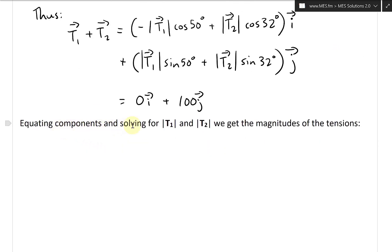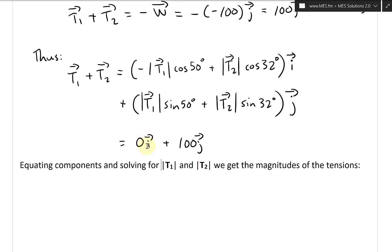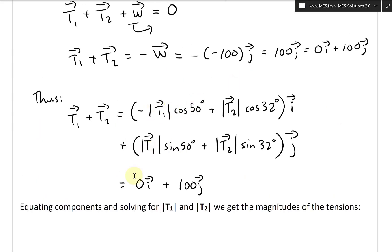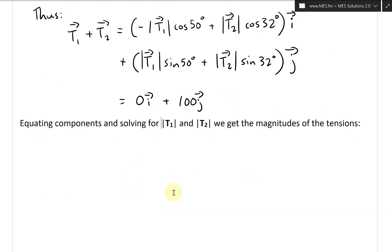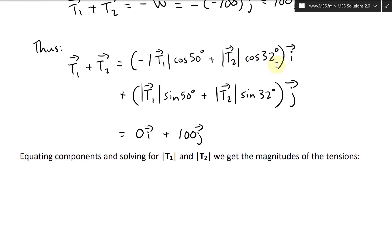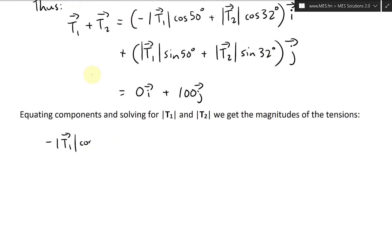Equating components: the i-components must equal 0, and the j-components must equal 100. So we get: −|T1| cos50° + |T2| cos32° = 0, and |T1| sin50° + |T2| sin32° = 100.